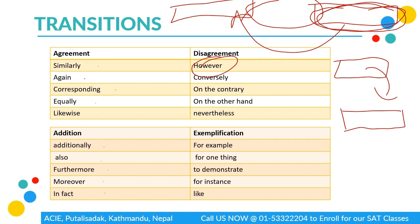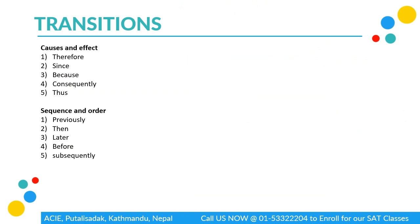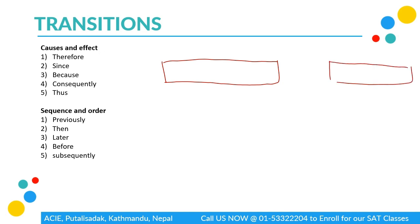Similarly, we have exemplification — used when giving an example. Words include: for example, for one thing, to demonstrate, for instance. Then we have cause and effect: if the first statement is the cause and the second is its effect, we use words like therefore, since, because, consequently, and thus.